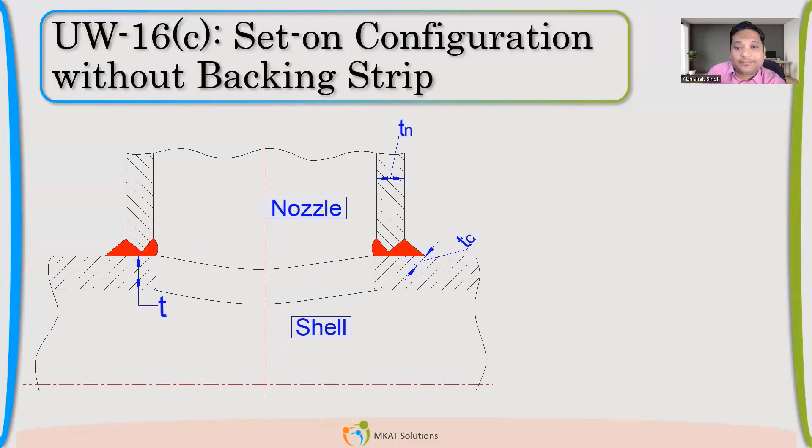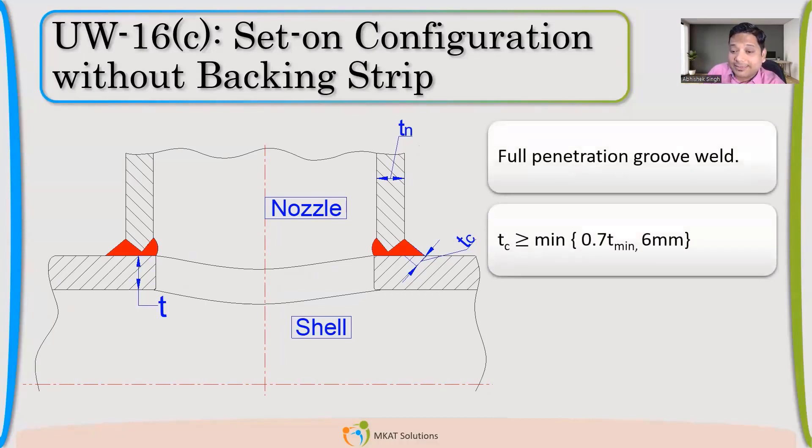So set-on configuration. Again, we have certain configuration. The weld type is little different. Again, it's full penetration. The TC value again is 0.7 times T minimum. So here also, instead of one side fillet weld, groove weld, it's both side. It's a double V kind of joint to achieve the full penetration. There is no backing strip. The backing strip is not required because we are welding from both sides. So it will be possible for larger nozzles, smaller nozzles. It's very difficult to grind, because we have to make groove from other side and then to weld. So it's difficult for smaller nozzles.